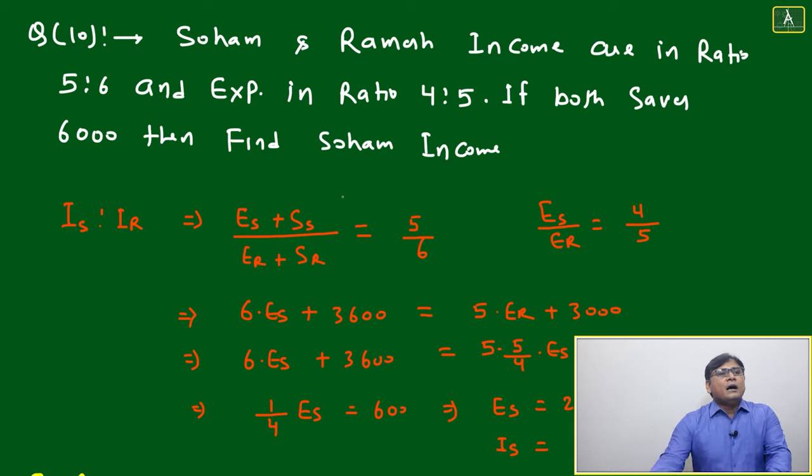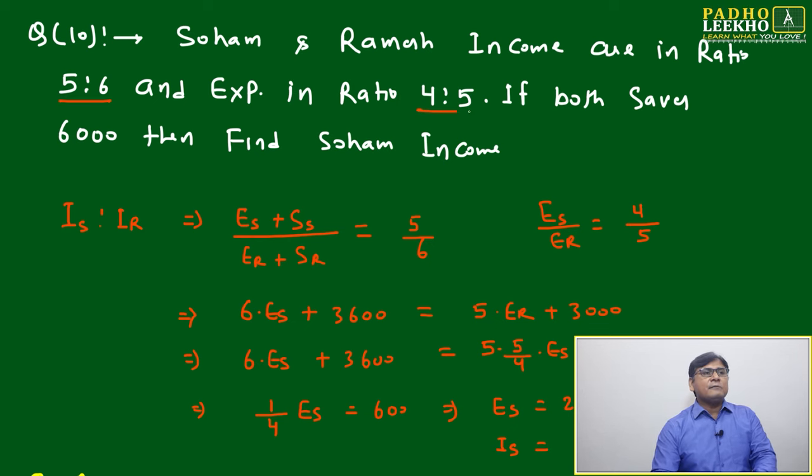Now we'll come to question number 10, which is based on ratio and proportion combined. Soham and Raman's income are in ratio 5:6 and expenditure in ratio 4:5.